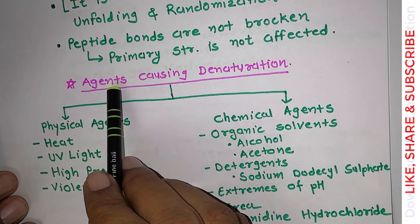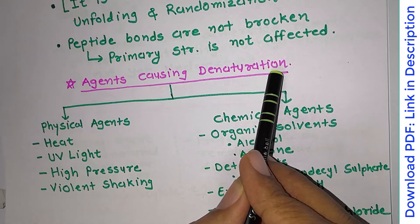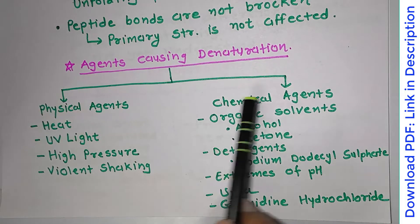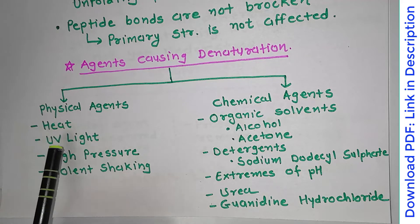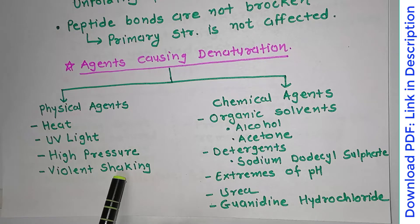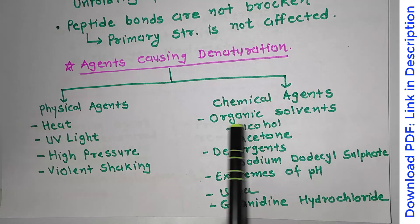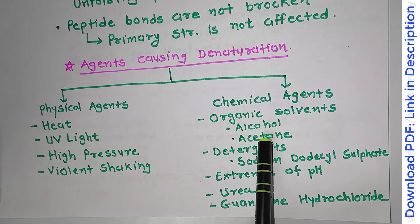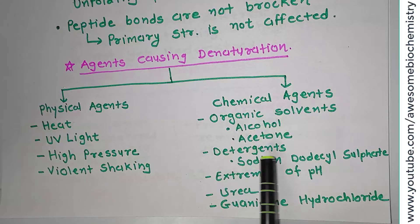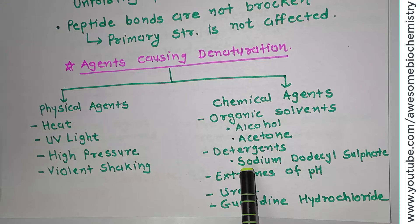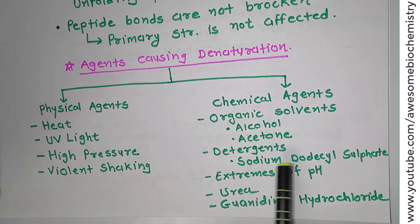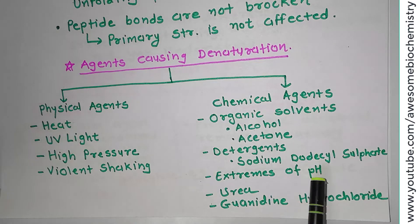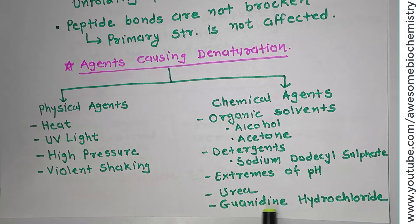There are two types of agents which can cause denaturation. One is physical agents and the other is chemical agents. Under physical agents, heat, ultraviolet light, high pressure, and violent shaking can lead to denaturation. Chemical agents include organic solvents — for example, alcohol and acetone — detergents such as sodium dodecyl sulfate (SDS), extremes of pH such as strong acid or strong alkali, and chemicals urea and guanidine hydrochloride.